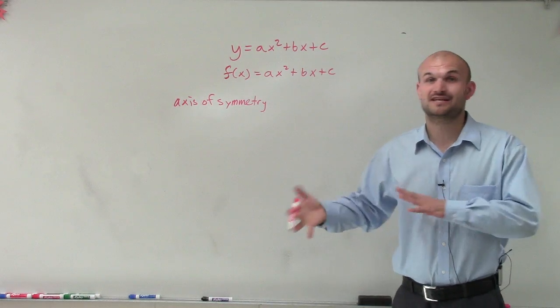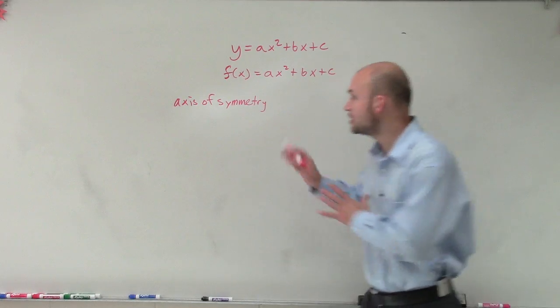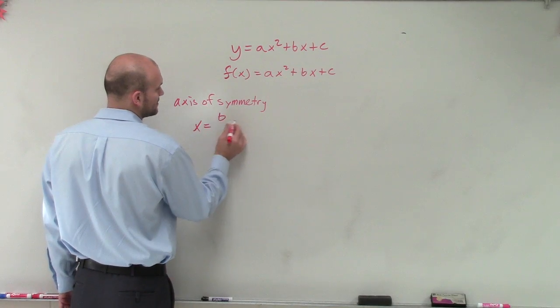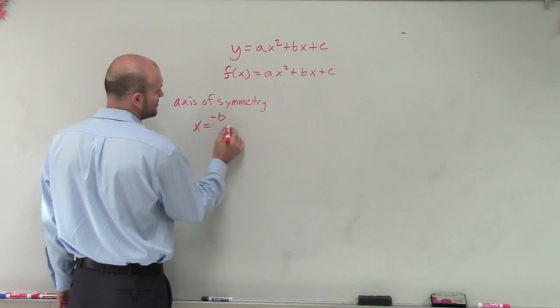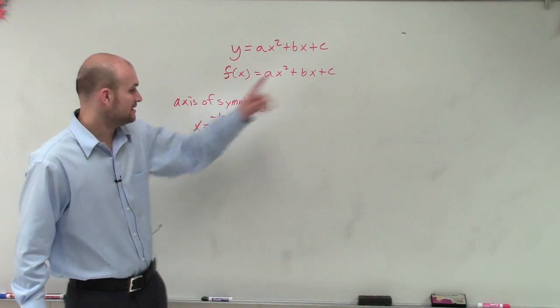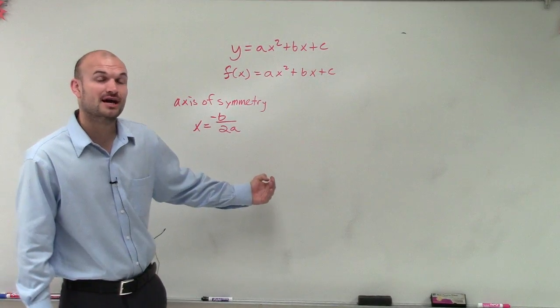So to find the axis of symmetry, if you have decimals, fractions, or very large numbers, we can always apply this form, which is x equals opposite of b divided by 2a. So we just take the opposite of our b and divide it by 2a, and that's going to be our axis of symmetry.